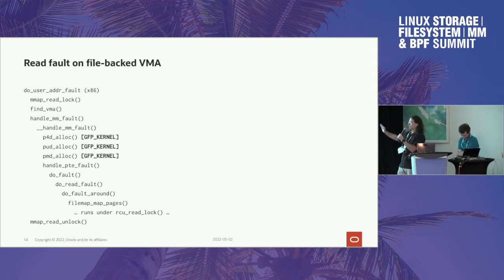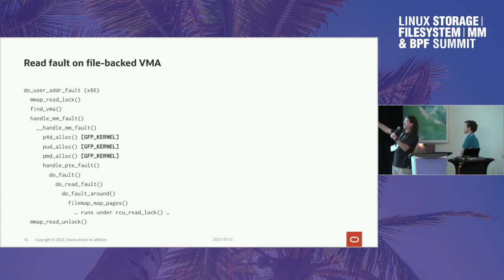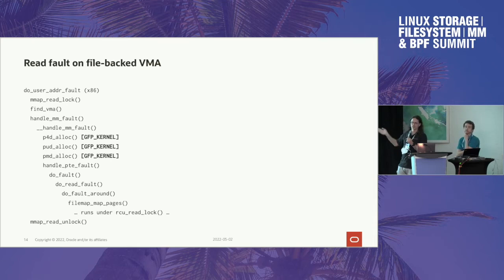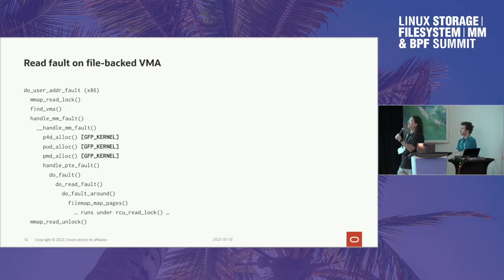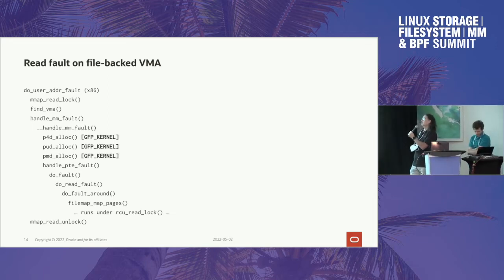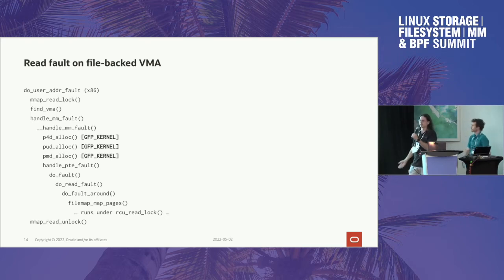So we're guaranteed it will stay stable. We pass the VMA down, and the problematic bit is when we get into double underscore handle MM fault and we call P4Dalloc, PUDalloc, and PMDalloc. I'm really glad that David went first because he did a fantastic job with those slides explaining what all these acronyms mean. But the problem from an RCU point of view is that those use GFP kernel allocation. So we might end up doing page reclaim, sleeping waiting on page writeback, and it is all a giant mess because obviously you can't sleep while holding the RCU readlock.